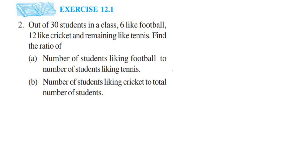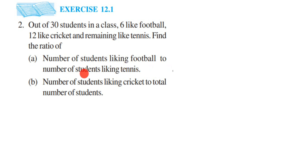Here is a question from exercise 12.1, second question. The chapter is Ratio and Proportion of class 6. The question is: out of 30 students in a class, 6 like football, 12 like cricket, and the remaining like tennis. Find the ratio — we have two questions here: number of students liking football to the number of students liking tennis, and number of students liking cricket to the total number of students.